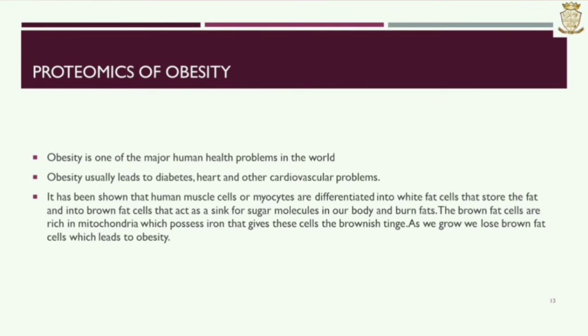Proteomics of Obesity. Obesity is one of the major human health problems in the world. Obesity usually leads to diabetes, heart, and other cardiovascular problems. It has been shown that human muscle cells or myocytes are differentiated into white fat cells that store fat, and into brown fat cells that act as a sink for sugar molecules in our body and burn fats. Brown fat cells are rich in mitochondria which possess iron that gives these cells their brownish tinge. As we grow, we lose brown fat cells, which leads to obesity.